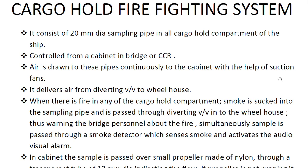The system delivers air from a diverting valve to the wheelhouse. The air sucked by the suction fan is delivered through the diverting valve to the wheelhouse or CCR — bridge and wheelhouse refer to the same location. When there is fire in any cargo hold compartment, smoke is sucked into the sampling pipe, passed through the diverting valve to the wheelhouse, thus warning the bridge personnel about the fire.